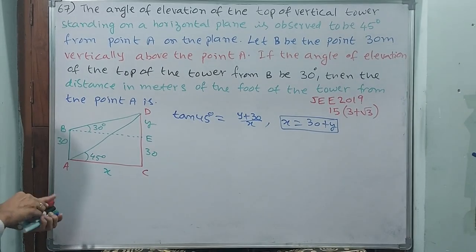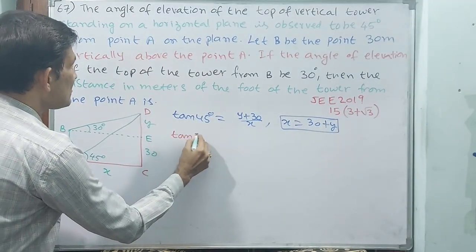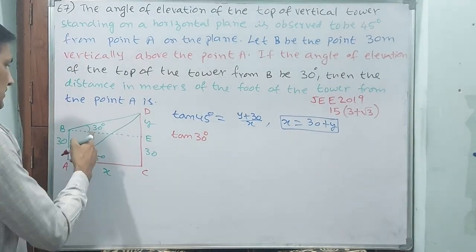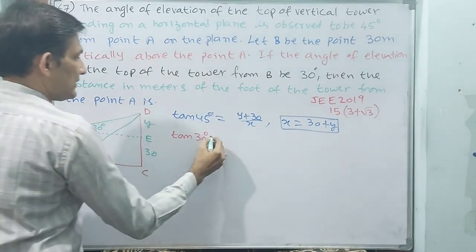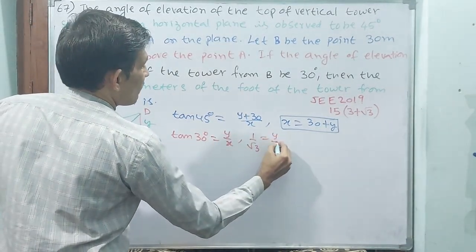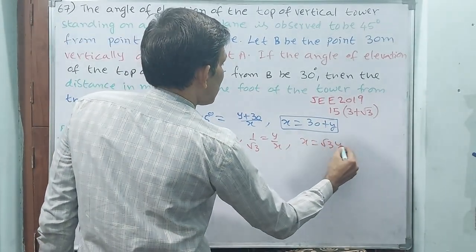Okay, now tan 30 equals y/x. See, 1/√3 equals y/x, so x equals √3y.